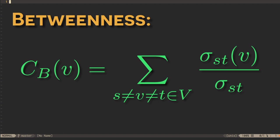it's the ratio of the number of shortest paths in the graph from all possible starting to all possible ending points that flow through vertex V to the number of all shortest paths through the graph.